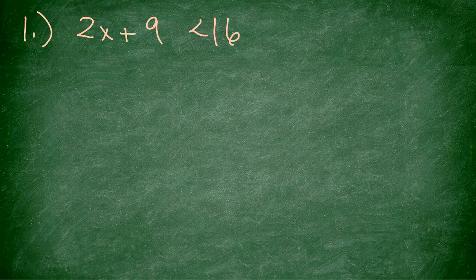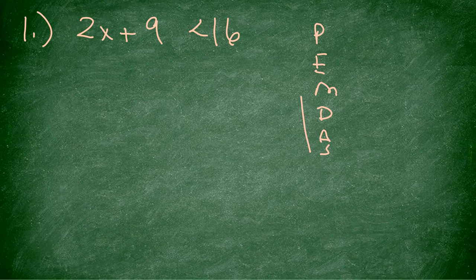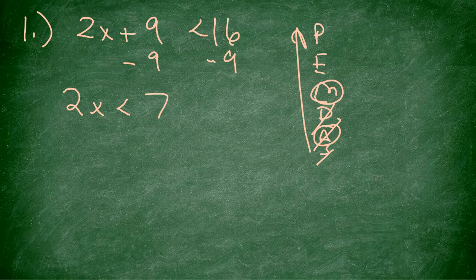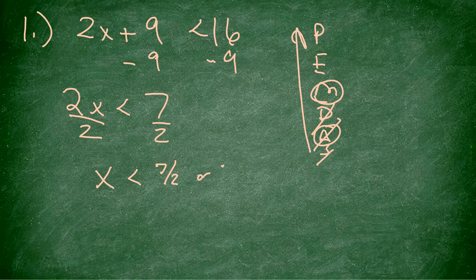Number one: we have 2x plus 9 is less than 16. First thing — if you're lost, I better see PEMDAS on your paper. Since there's addition, I subtract 9 from both sides. I get 2x is less than 7. Got rid of the addition — there's multiplication, so I divide by 2.